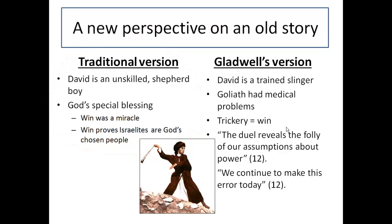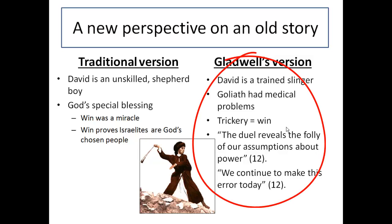In Gladwell's version, David is presented as a trained slinger. Also, Goliath had many medical problems. Instead of winning being a sign of God's blessing, the win is perceived in the form of trickery. On page 12, the author writes: the duel reveals the folly of our assumptions about power, and that we continue to make this error today.